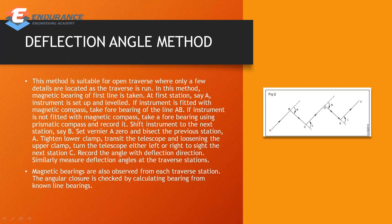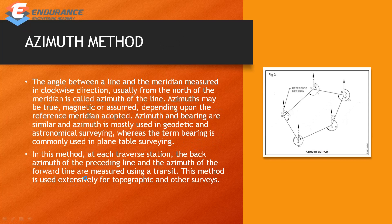The deflection angle method uses open traversing. You observe the magnetic bearing at each station and observe the angle of closure. You can use the angle of closure to check accuracy. Next is the azimuth method.